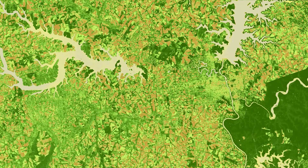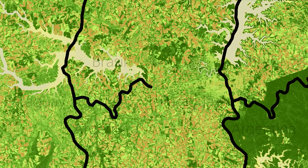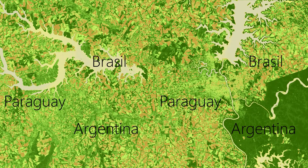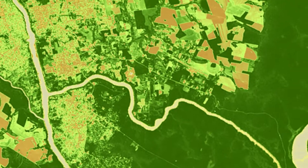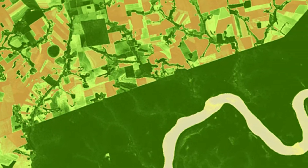In two NDVI images — in which vegetation is clearly distinguishable from other areas — dating from 1973 and 2019, the Triple Frontera, the border area of Argentina, Brazil, and Paraguay, can be seen. They show large-scale deforestation, the conversion of former rainforest areas, the anthropogenic rerouting of water courses, and the construction of reservoirs, all within the last 50 years.